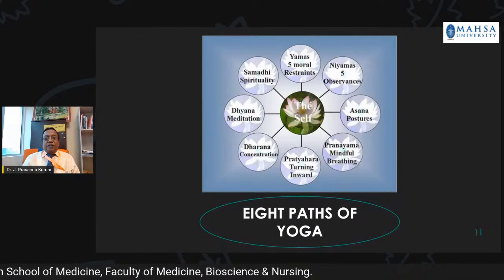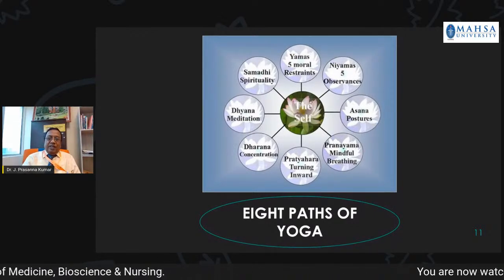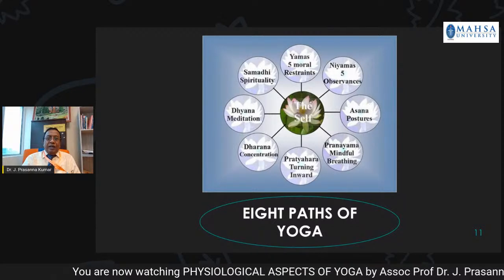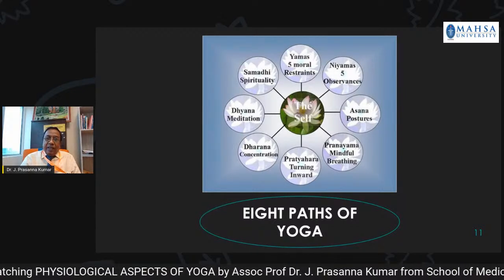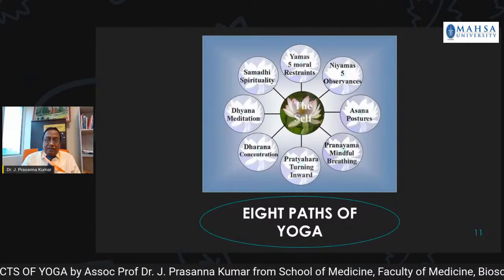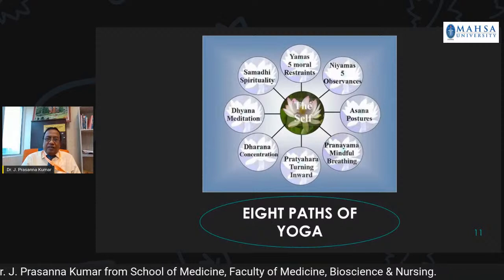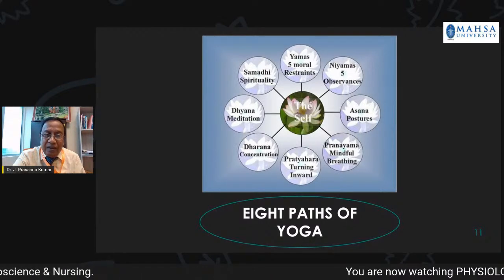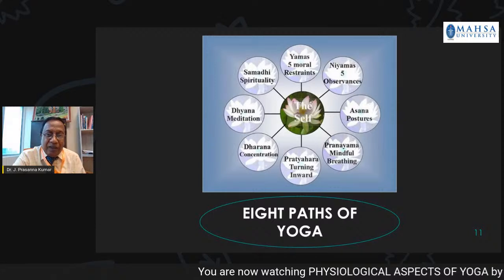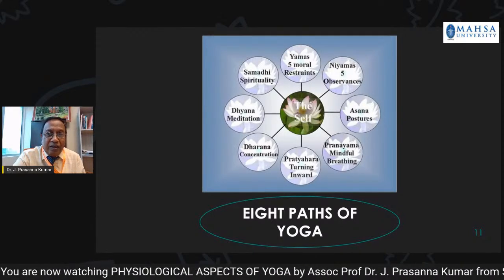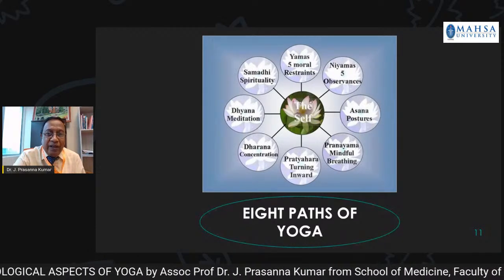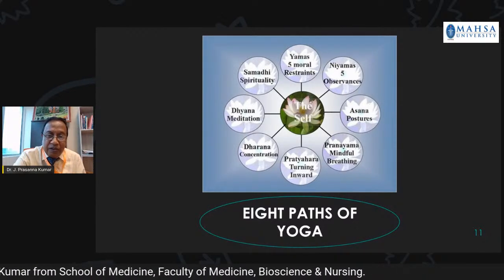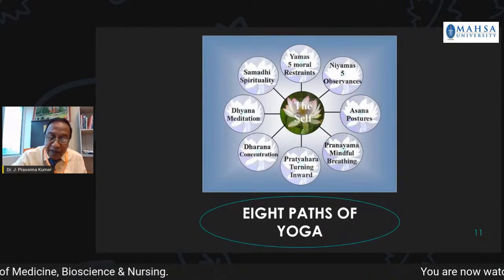There are eight parts of yoga, with the self at the center. The first is yamas — five moral restraints. The second is niyamas — five observations. Third is asana — postures. Fourth is pranayama — mindful breathing. Fifth is pratyahara — turning the mind inwards. Sixth is dharana — concentration. Seventh is dhyana — meditation. And eighth is samadhi — spirituality. All eight parts of yoga are important to attain the final goal.